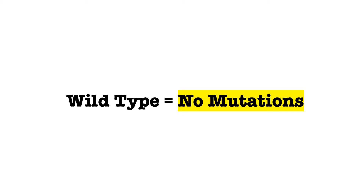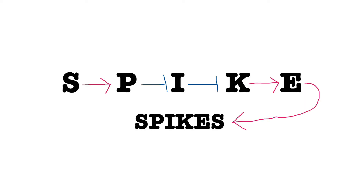They first had to determine if the wild type, which is a version with no mutations, would lead to the development of spikes. In the wild type version, S promotes P, which then inhibits I. Without the presence of I to inhibit K, K is able to promote E, which then promotes the development of spikes.